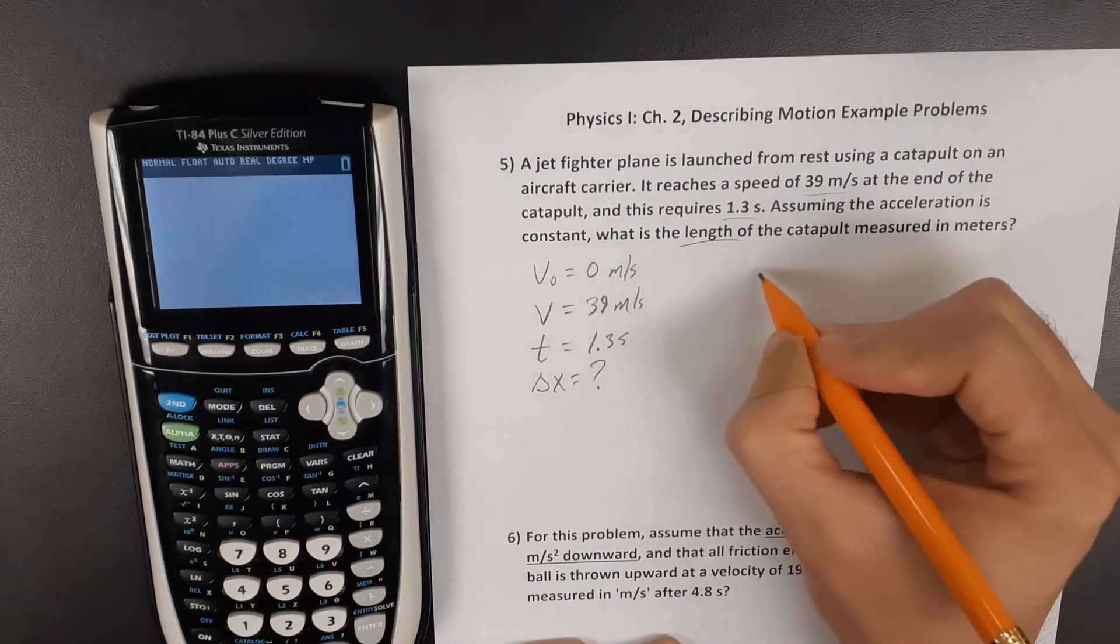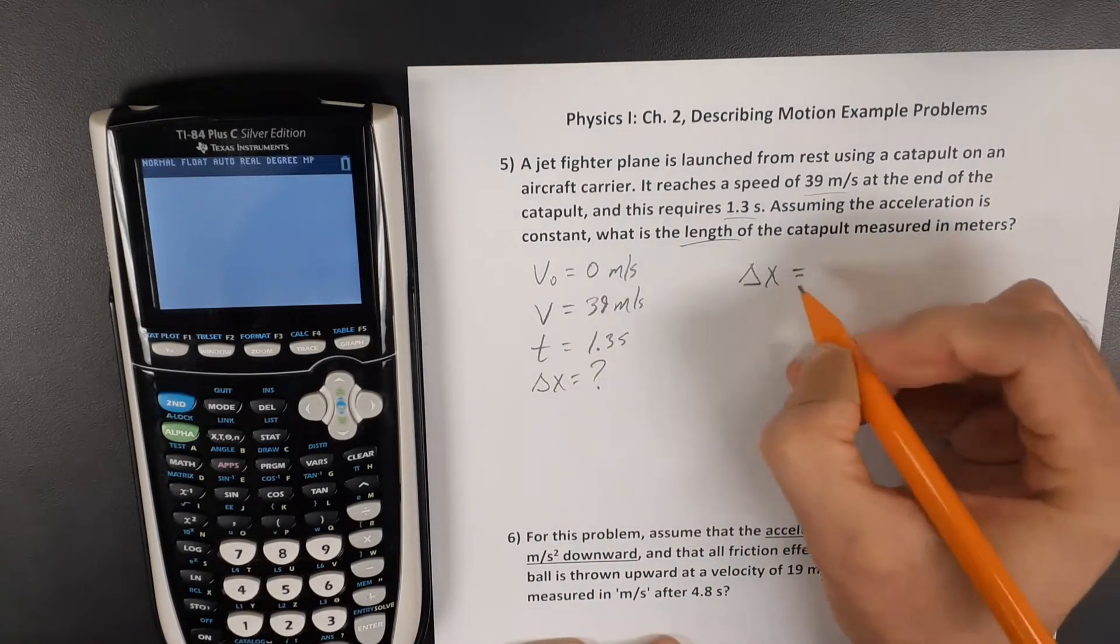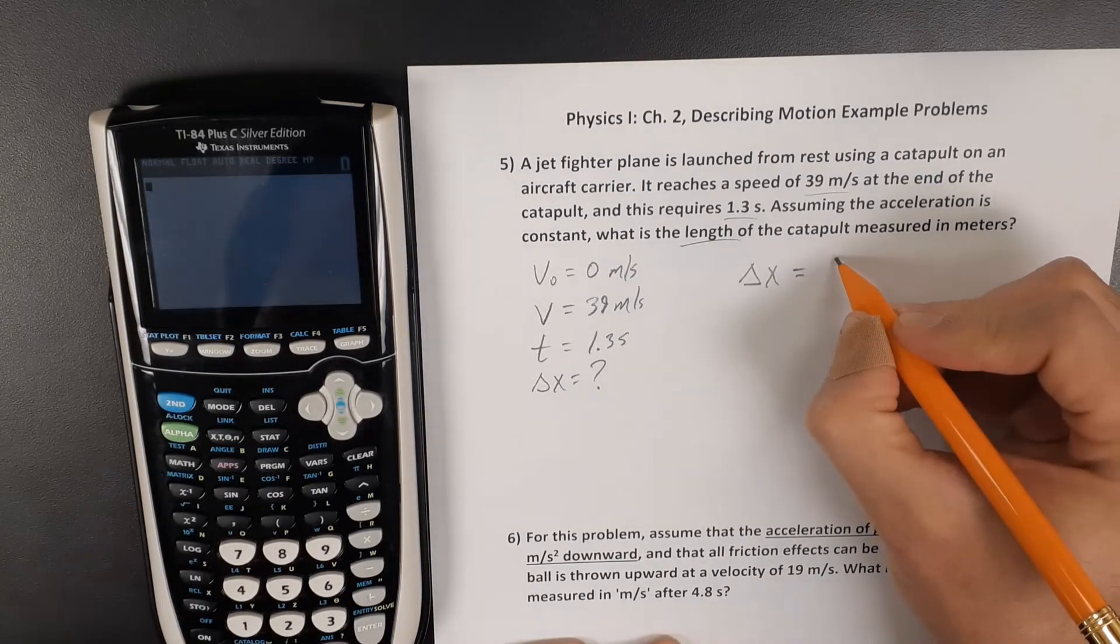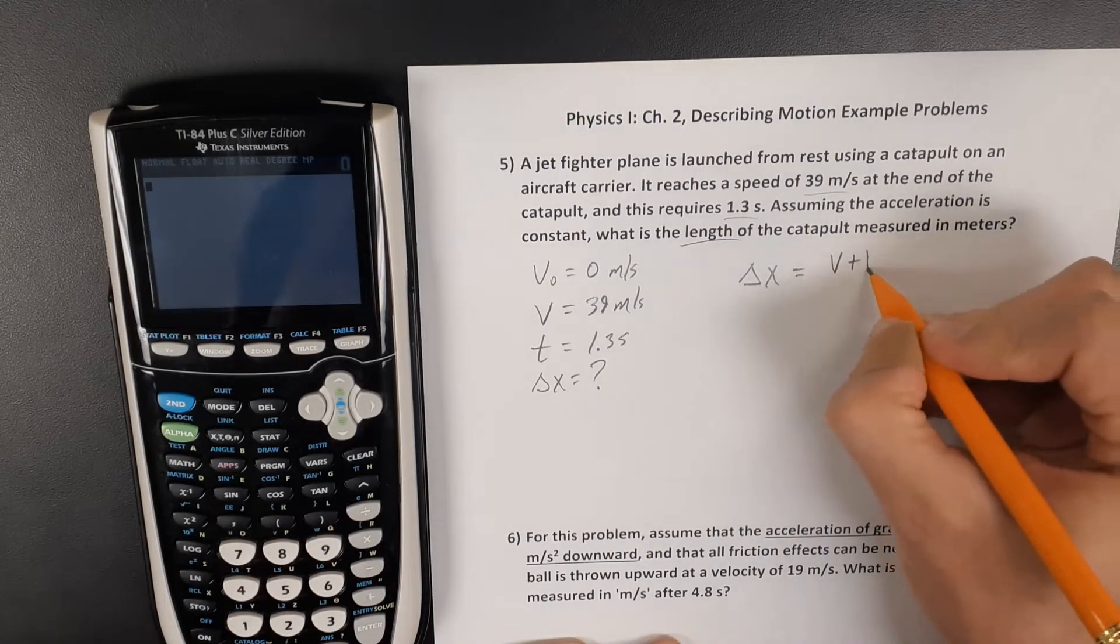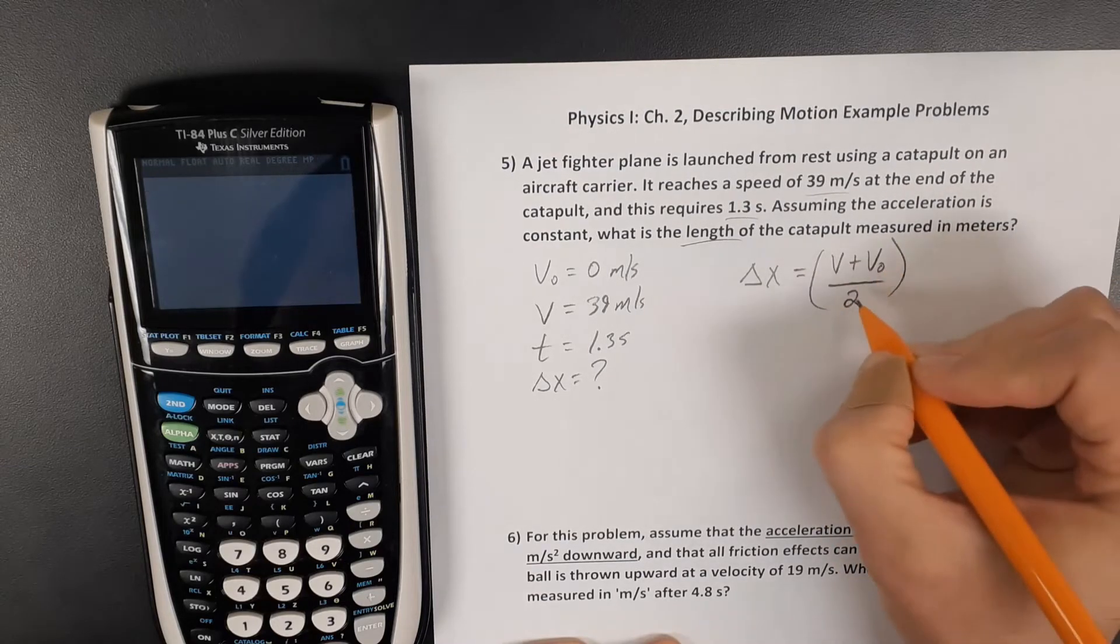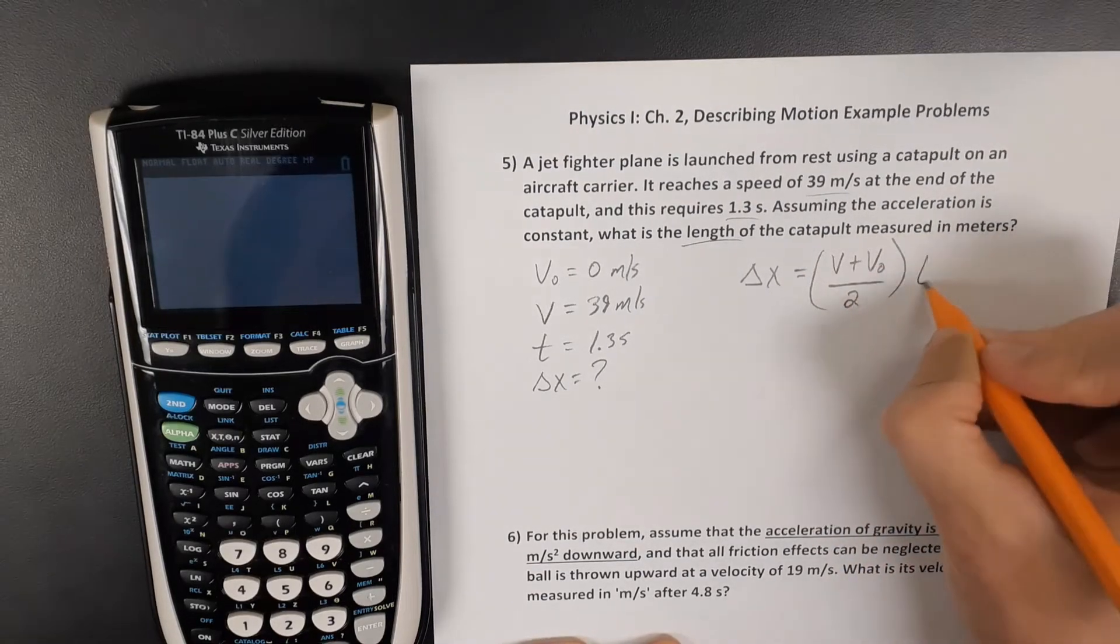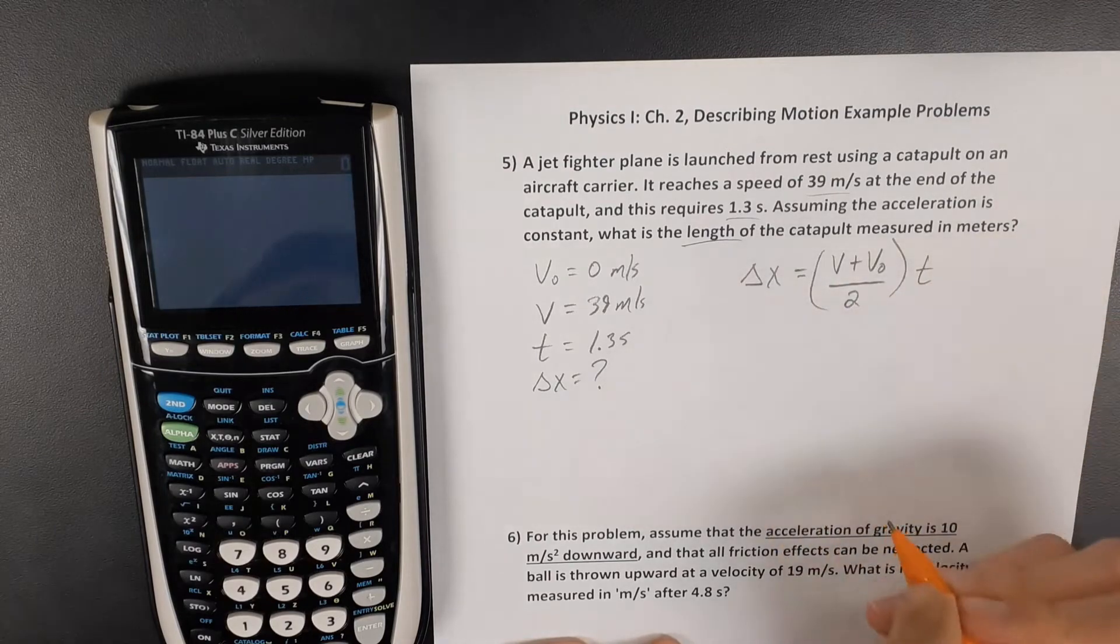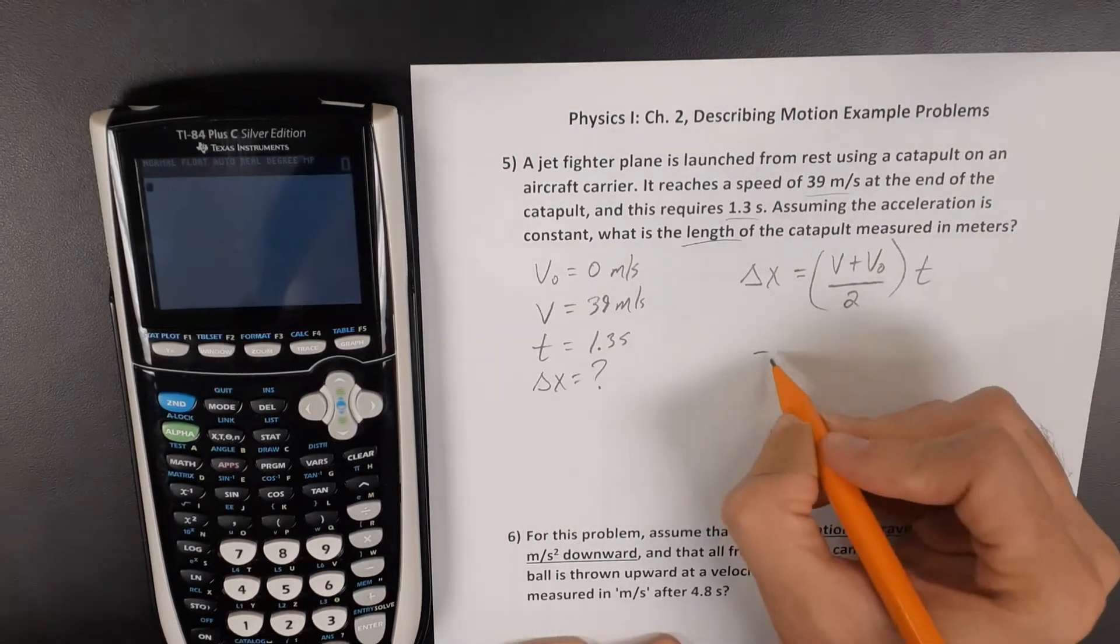So we know that displacement is average velocity times time. Well average velocity is the final plus the original divided by 2 and that would give us the average speed. And multiply that times the time would tell us how far this plane travels.